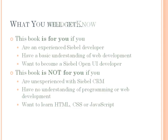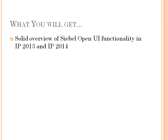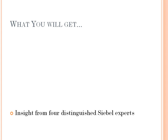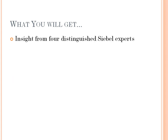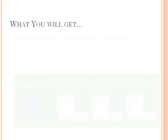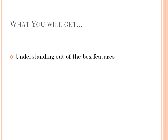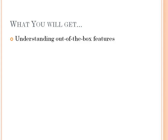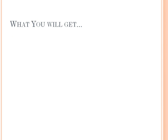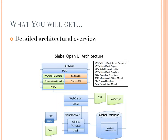So having said that, let's see what you will get from the book. You will get a solid overview of standard functionality. You will get insight from the four expert authors from Oracle, and we will discuss the out-of-the-box features like the new map API. We discussed the architecture in great detail.